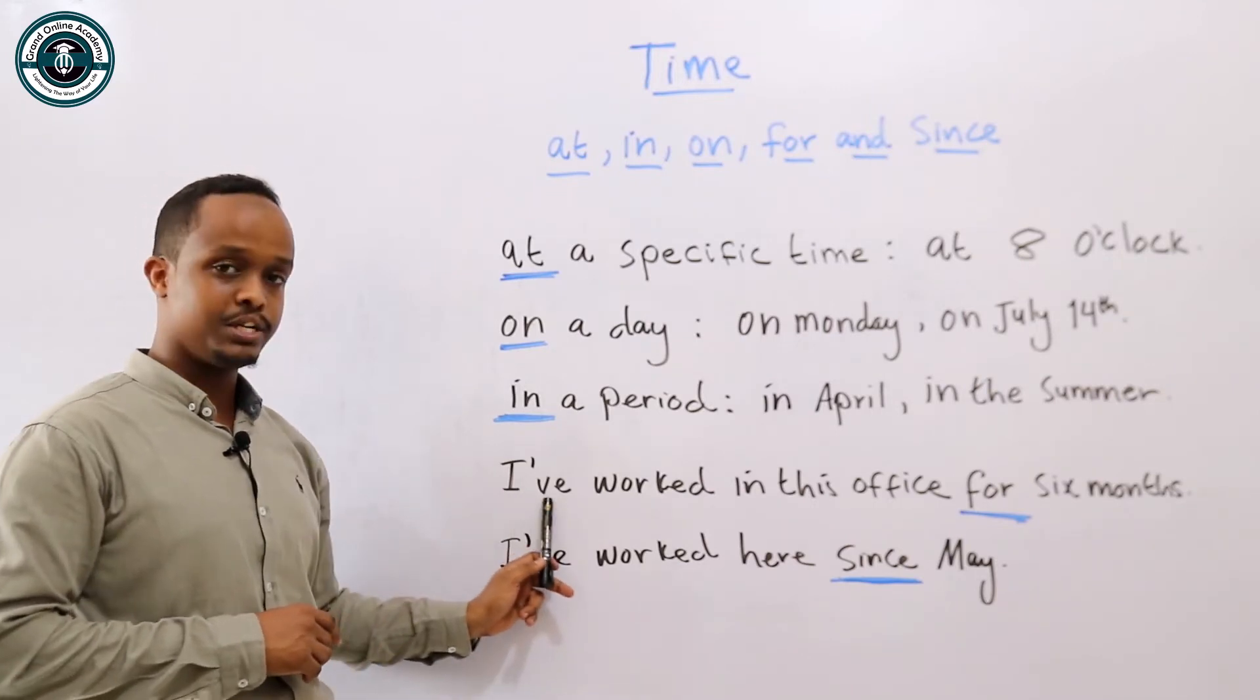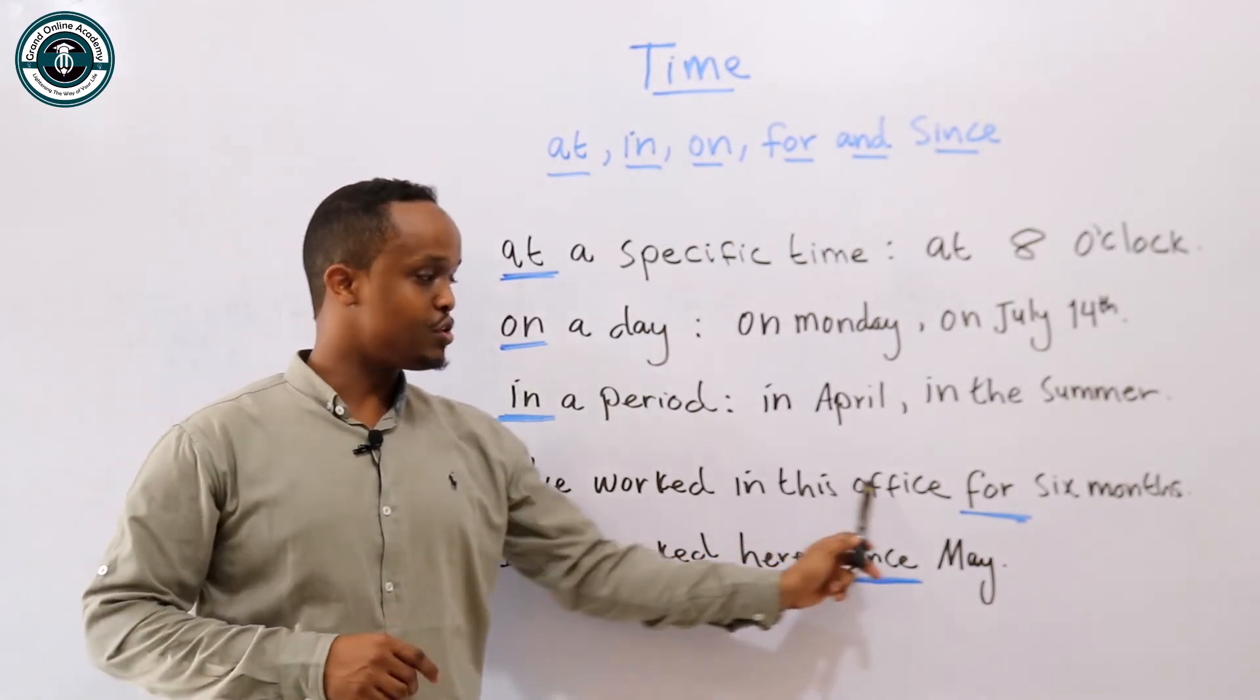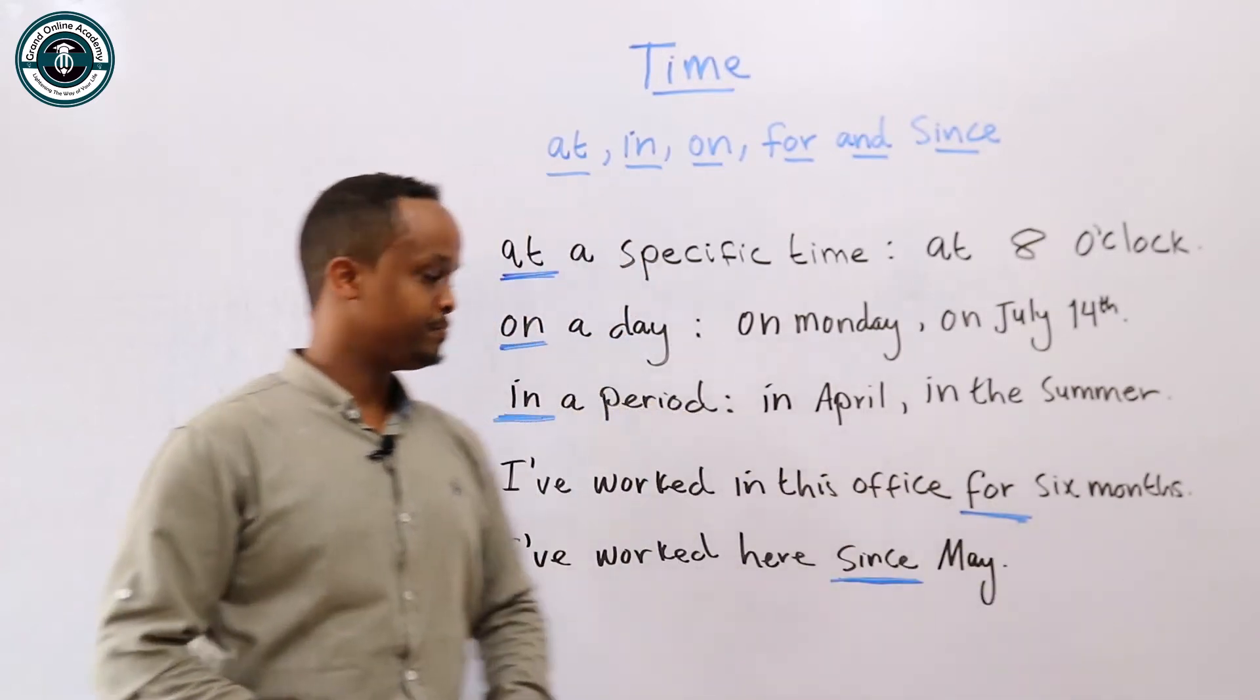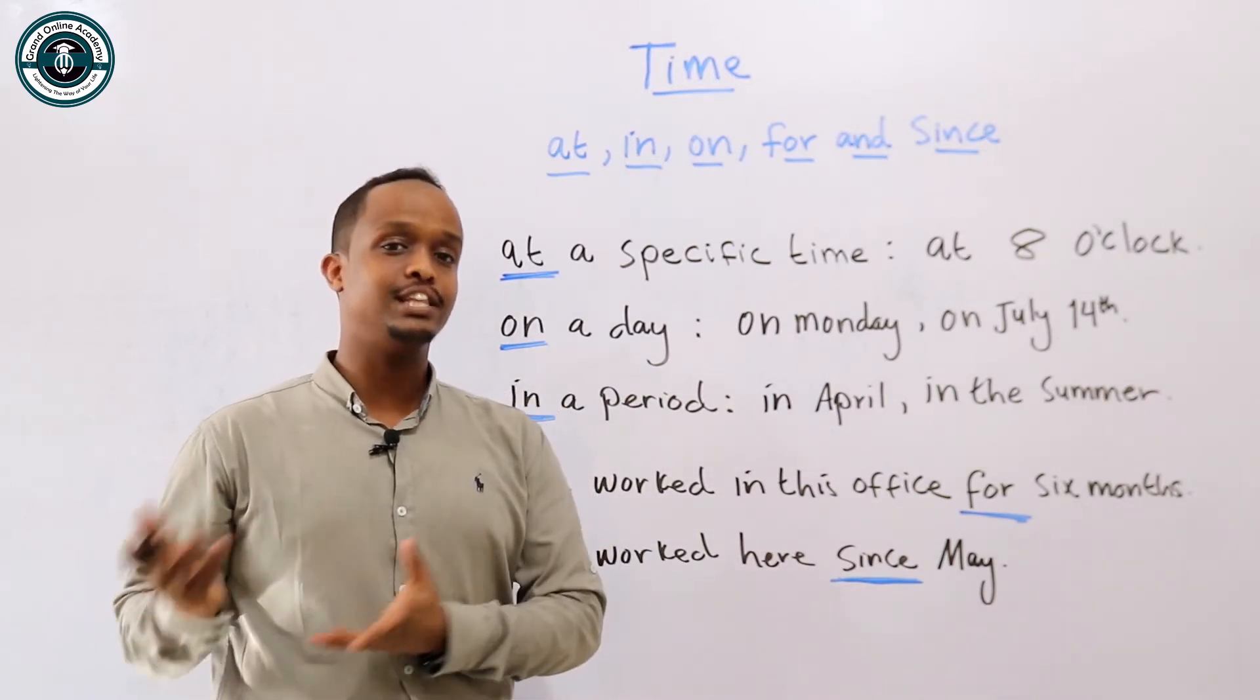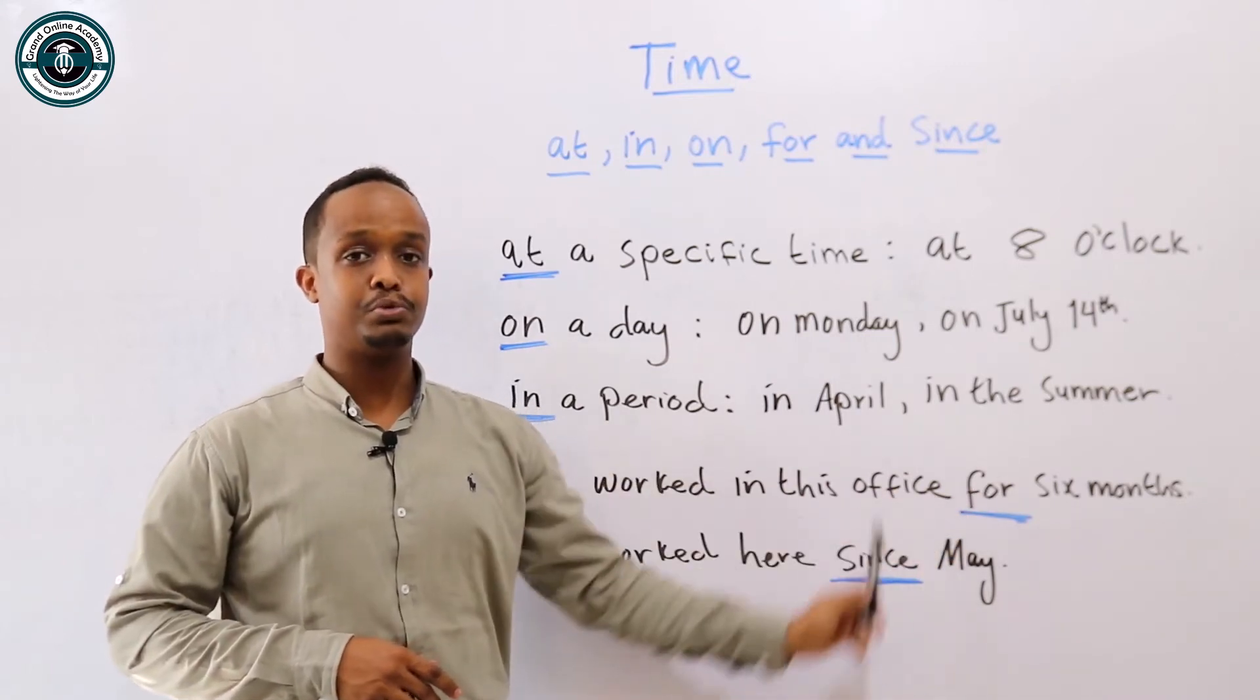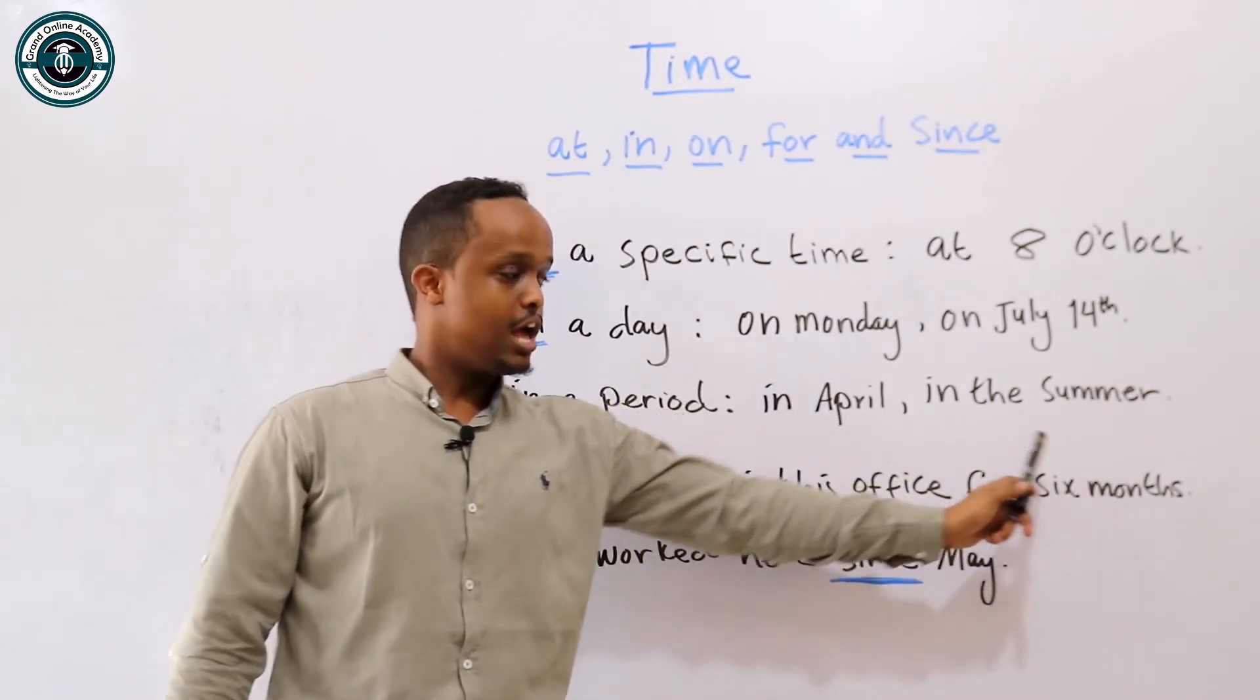This is a contraction. I've worked - I've worked in this office for six months. For and since are very confusing for non-native speakers, and you'll have problems knowing which one is which and which one is right.